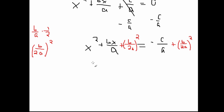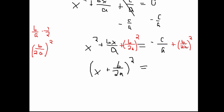The left side can be factored out into x plus b over 2a, all squared. On the right side, we expand the squared term: it equals negative c over a plus b squared over 4a squared. We just distribute the power of 2 to the b and to all the numbers in the denominator.